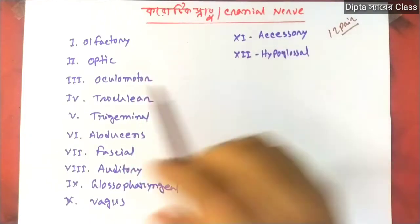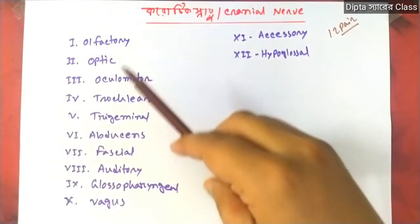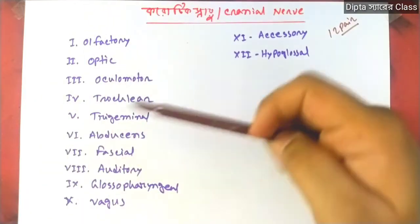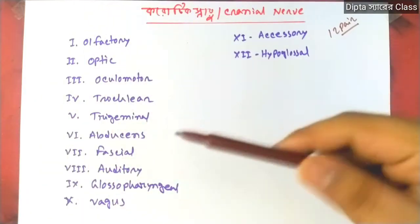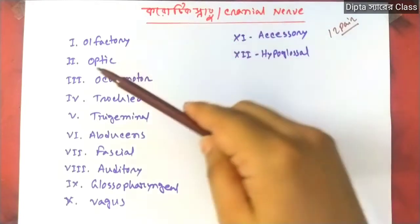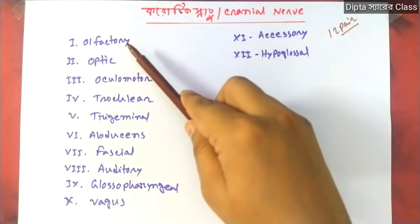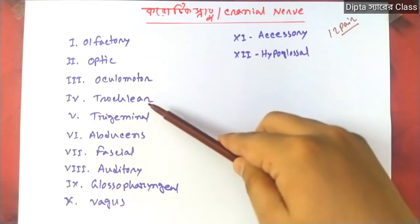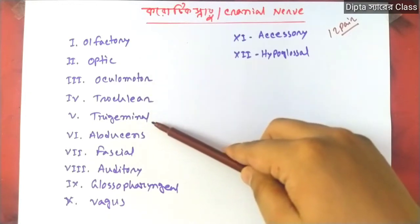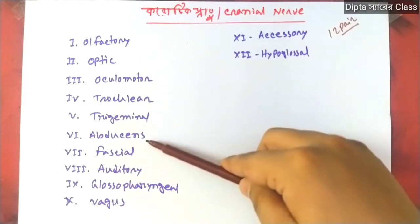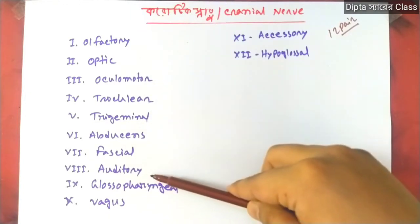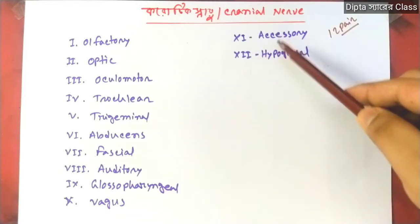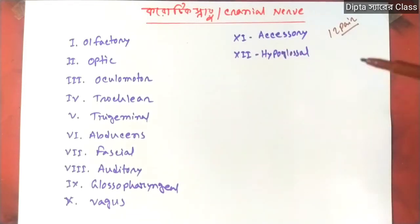We have seen the first name of the cranial nerve. I am going to tell you all about the names. First name is Olfactory, then Optic, Oculomotor, Trochlear, Trigeminal, Abducens, Facial, Auditory, Glossopharyngeal, Vagus, Accessory, and Hypoglossal.